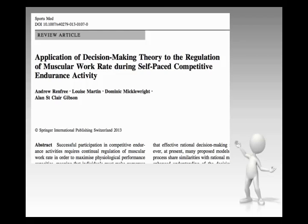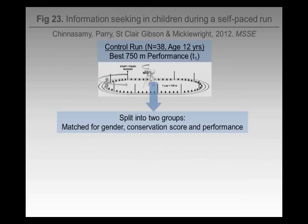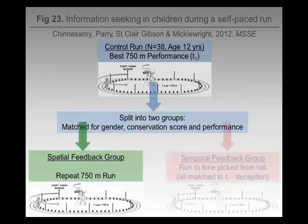That type of decision-making is called heuristic decision-making. It means that people can make good decisions based on actually relatively few cues, without necessarily knowing all the possible scenario outcomes, and yet can still successfully navigate the scenario.